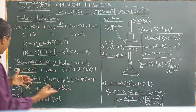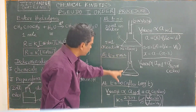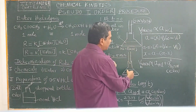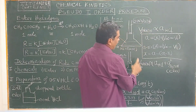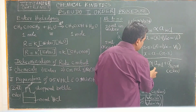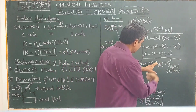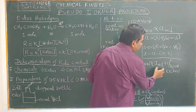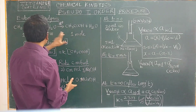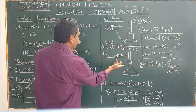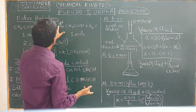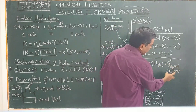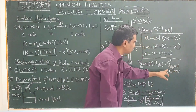Similarly, after 5 minutes, take out another 5 ml of reaction mixture, add 20 ml of ice water, shake well, and titrate against 0.1 normal sodium hydroxide. At time t, the volume of sodium hydroxide consumed is proportional to the concentration of HCl plus the concentration of acetic acid, since the catalyst is regenerated and its concentration remains constant. One mole of acetic acid corresponds to one mole of acid at time t.